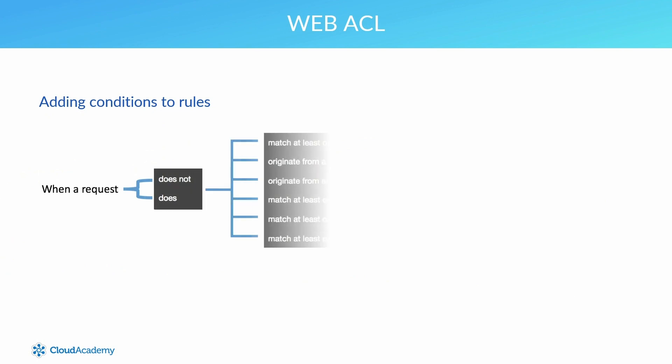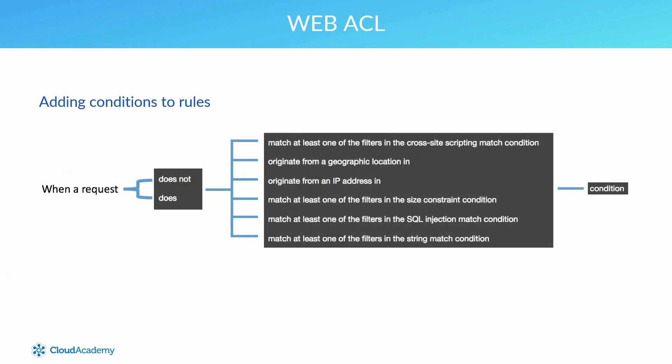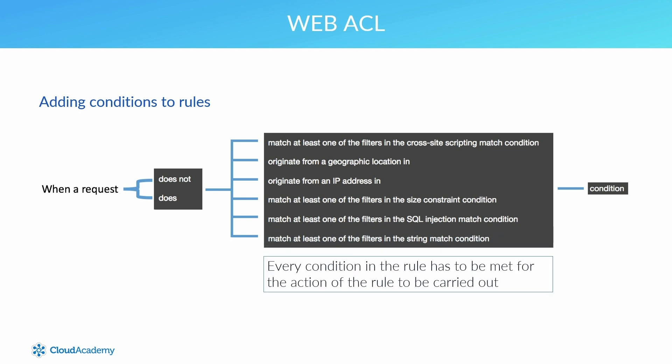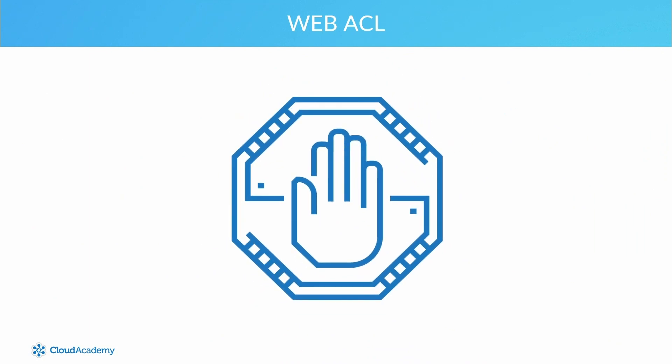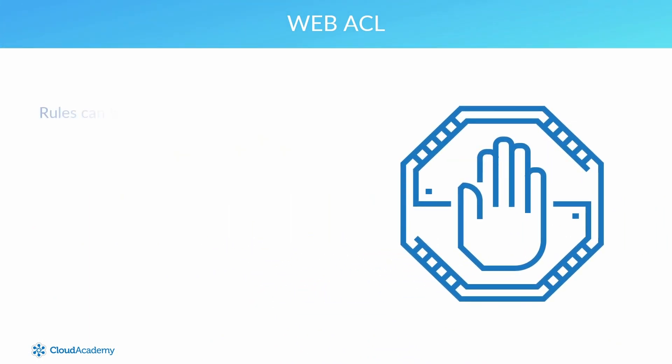When it comes to adding your conditions to the rule, you must specify some parameters that the condition relates to, and the following options must be made for each request. Your rule is not limited to a single condition — it's possible to add more as you see fit. And to reiterate, every condition in the rule has to be met for the action of the rule to be carried out. The action associated with the rule is defined in the web ACL, the Access Control List.